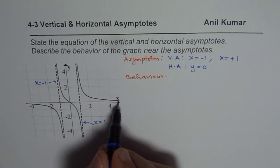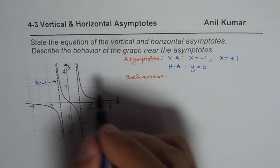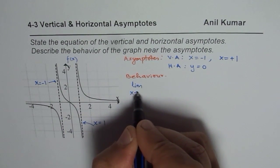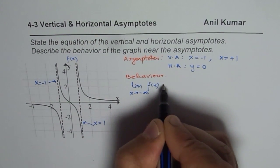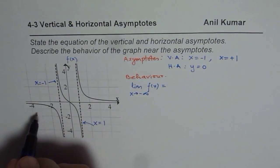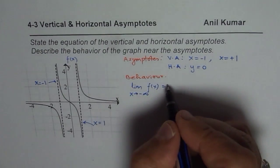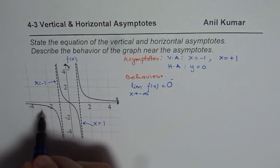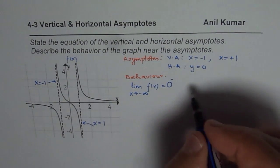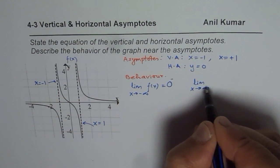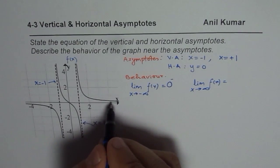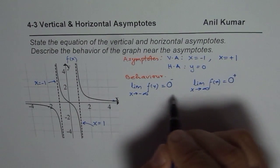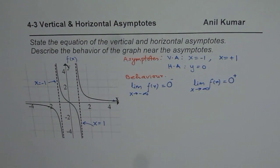Let's consider the horizontal asymptote first. For the function, let's call this function f of x. As we can say, the limit of the function as x approaches minus infinity is zero — approaching from the negative side. Similarly, the limit as x approaches positive infinity is zero, but from the positive side, so that is zero plus. This is very helpful when you have to sketch the graph of the function.